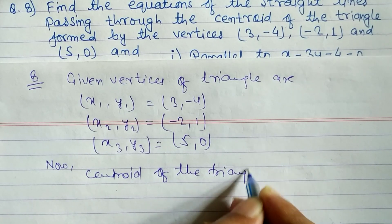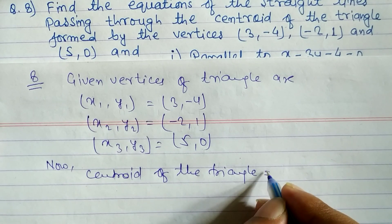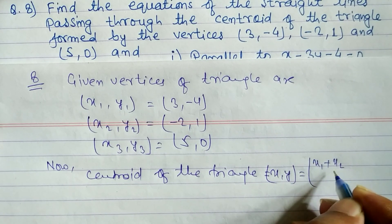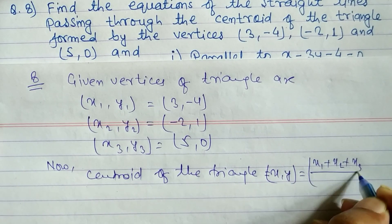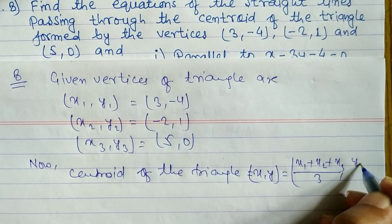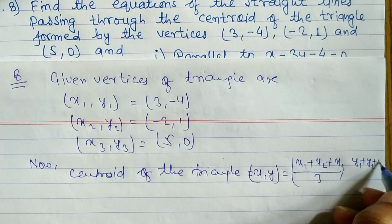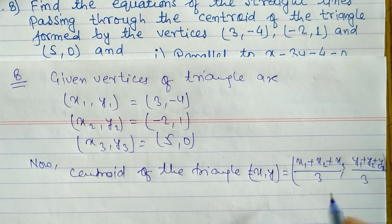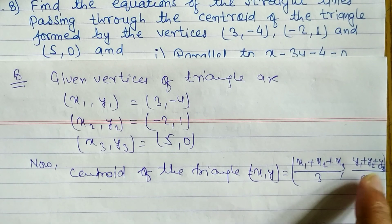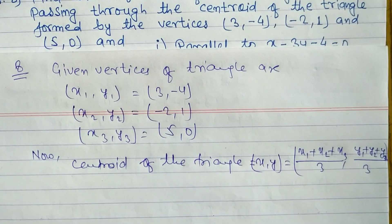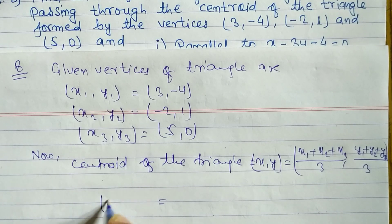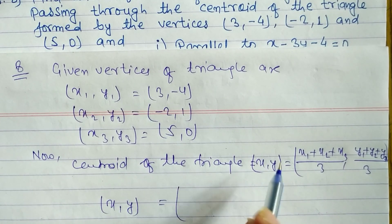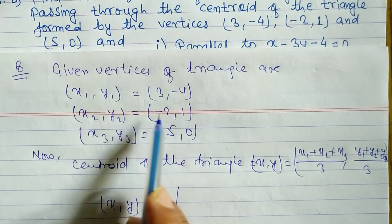The formula for the centroid is: centroid (x, y) = ( (x1 + x2 + x3) / 3, (y1 + y2 + y3) / 3 ). Now we just put in the values to get the centroid coordinates.